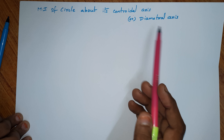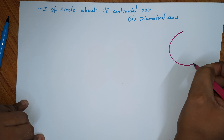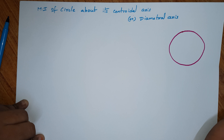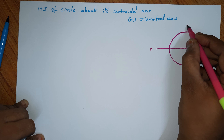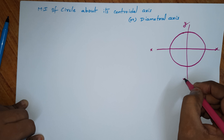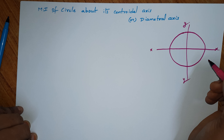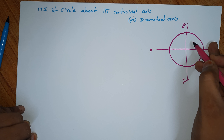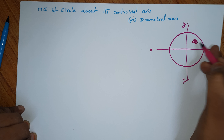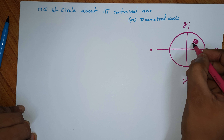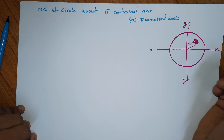We will ask questions about this. First, we will draw a circle, with a horizontal axis XX and vertical axis YY. We will use the direct integration method to solve this. We use a reference strip at origin, at a distance R from the origin.